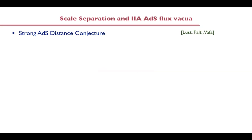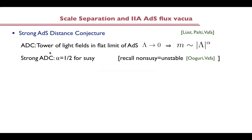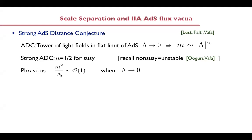Let me move to the case of the discussion of three-forms, which has to do with scale separation in anti-de Sitter. The strong anti-de Sitter distance conjecture states that if you take some anti-de Sitter vacuum in quantum gravity and try to reach the flat space limit — lambda goes to zero — then there is a tower of light fields, a cutoff becoming light as a power with order-one coefficient of the vacuum energy. The strong ADC is that this alpha is one-half for SUSY. The non-SUSY cases are taken to be unstable by the Ooguri-Vafa proposals about non-supersymmetric anti-de Sitter. So the strong ADC says that the cutoff scale squared divided by vacuum energy should be of order one when lambda goes to zero in this flat space limit. There are many interesting examples of this — all the holographic cases we have just seen satisfy it.